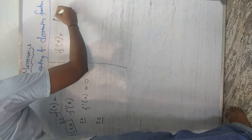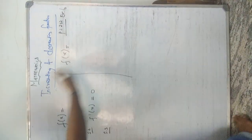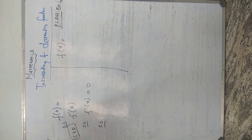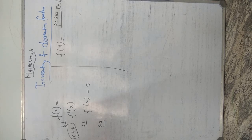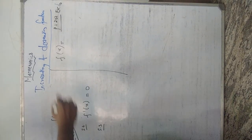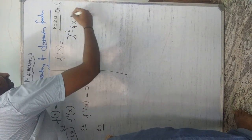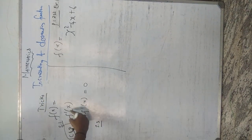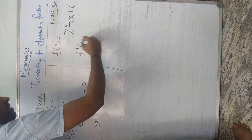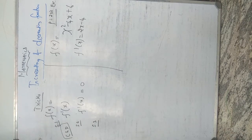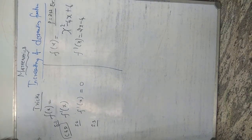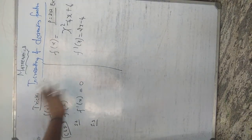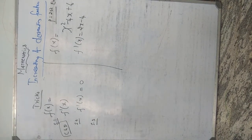Page 202, example number 10: find the intervals in which the function is (a) strictly increasing, (b) strictly decreasing. f(x) = x² - 4x + 6. Shortcut trick — differentiate one time: f'(x) = 2x - 4.